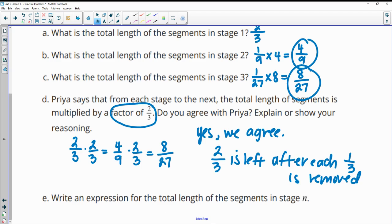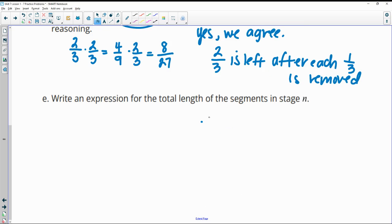And then part E says, write an expression for the total length of segments in stage N. So if we have two-thirds at each stage, that would be two-thirds to the N. So two-thirds to the first would have been that two-thirds. Two-thirds to the second would have been four-ninths. Two-thirds to the third would be eight-twenty-sevenths. So two-thirds to the N when N is greater than or equal to one would be an equation for that.